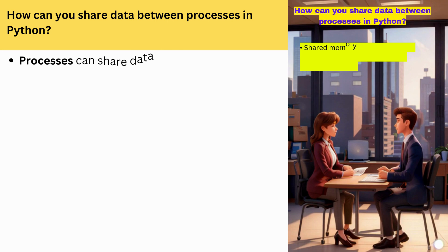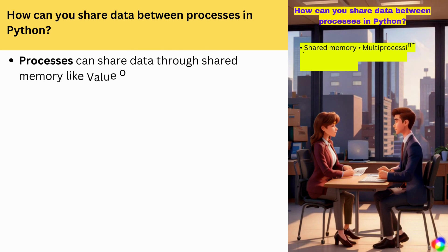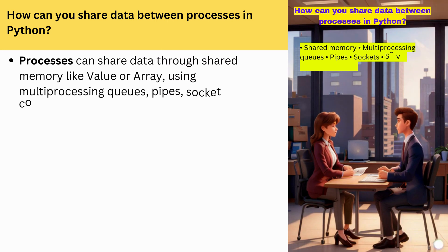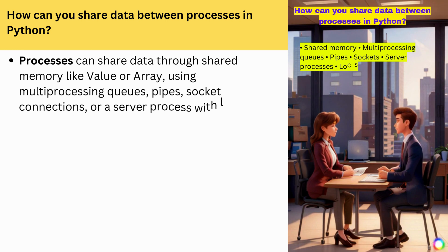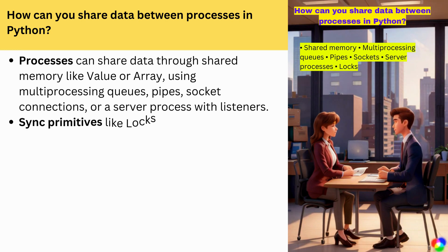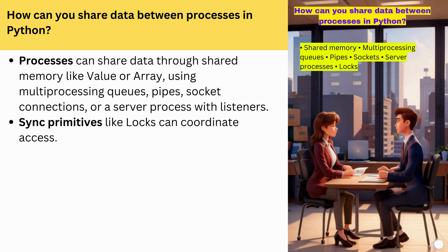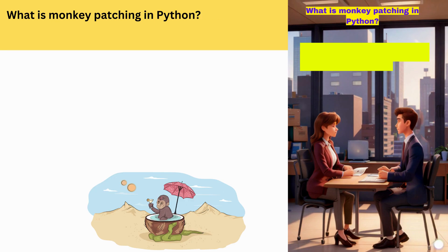How can you share data between processes in Python? Python processes can share data through shared memory like value or array, using multiprocessing queues, pipes, socket connections, or a server process with listeners. Sync primitives like locks can coordinate access.